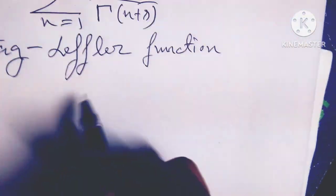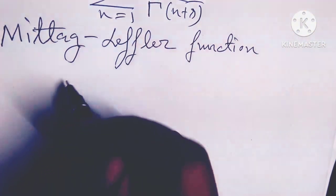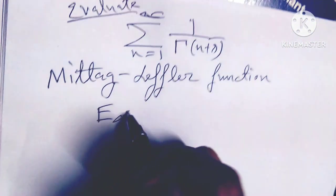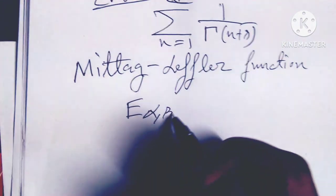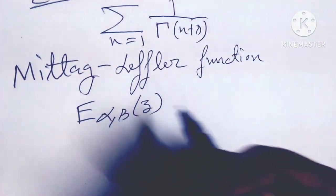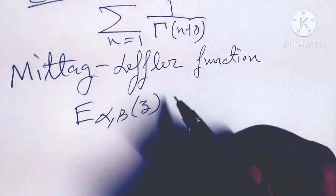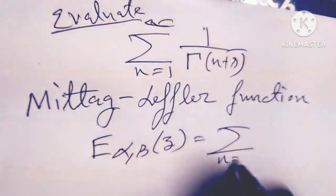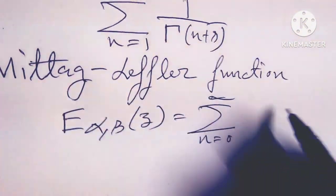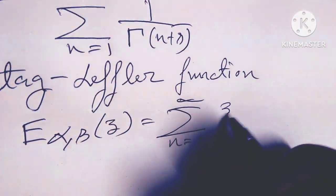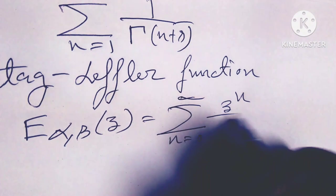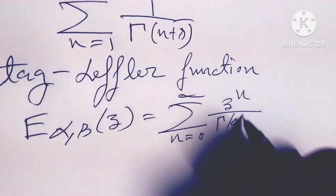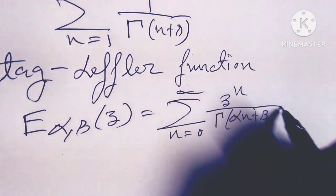The Mittag-Leffler function is defined as E_{alpha,beta}(z) equals the sum from n equals 0 to infinity of z to the power n divided by gamma(alpha·n plus beta).